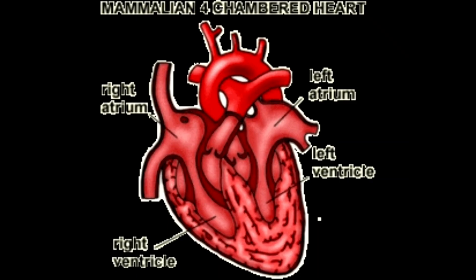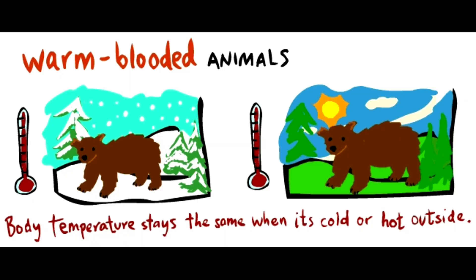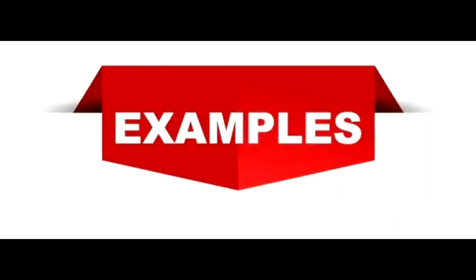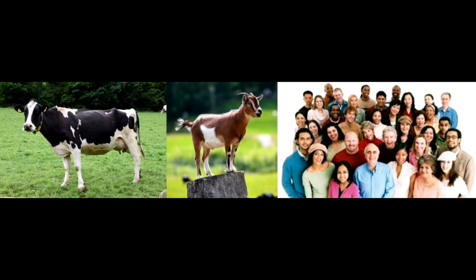They have a four-chambered heart. They are warm-blooded animals and their body temperature remains constant. Some examples of Class Mammalia are cow, goat, human beings, etc.